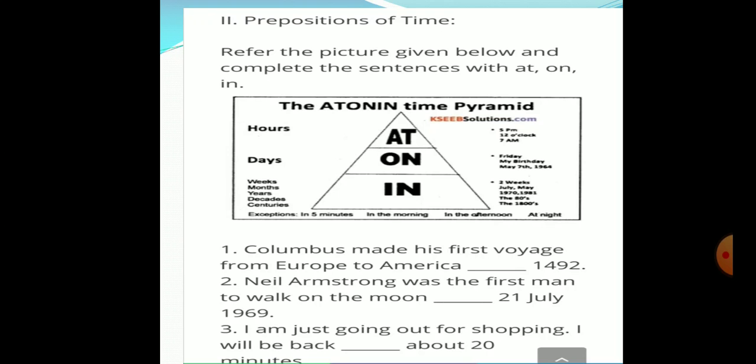In the second section, there are some prepositions of time. Just look at the given pyramid picture there. How they have used three prepositions there. At, on and in. For example, come at 5 PM. On prepositions is used whenever we have the names of the days, Friday, my birthday, May 7th 1964. My birthday is on Friday.